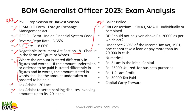RBI Consortium — this is an RBI circular. DD should not be above a certain amount — this is again from Negotiable Instrument. Income Tax Act — this is a kind of news-based question, it was in the news. Not necessarily you have to study the entire Income Tax Act — I won't recommend that. It's very large and there's no need.